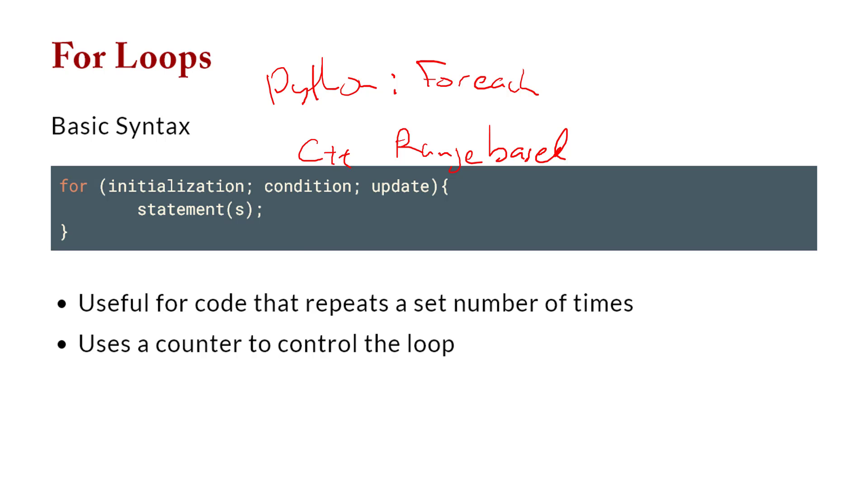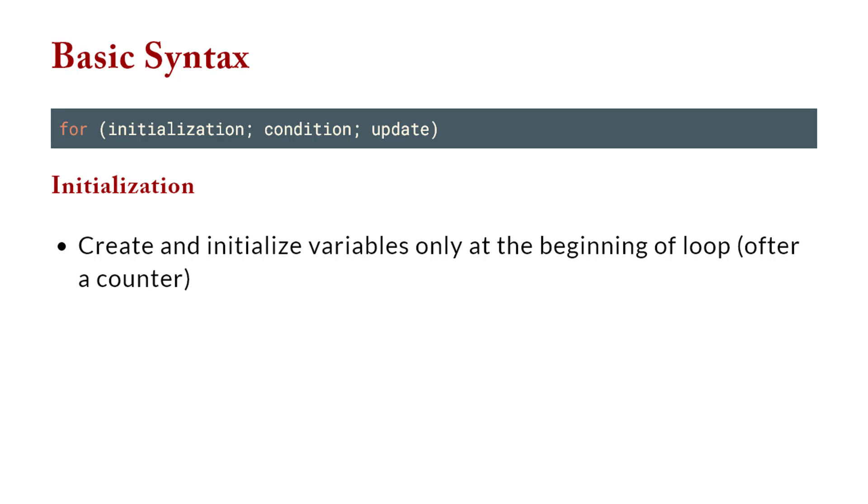And so the way that we have the structure is as you see below. We have three statements: a for and then an initialization, a condition, and an update. So it's kind of a neat little structure because it packs a lot of information in a tiny block.